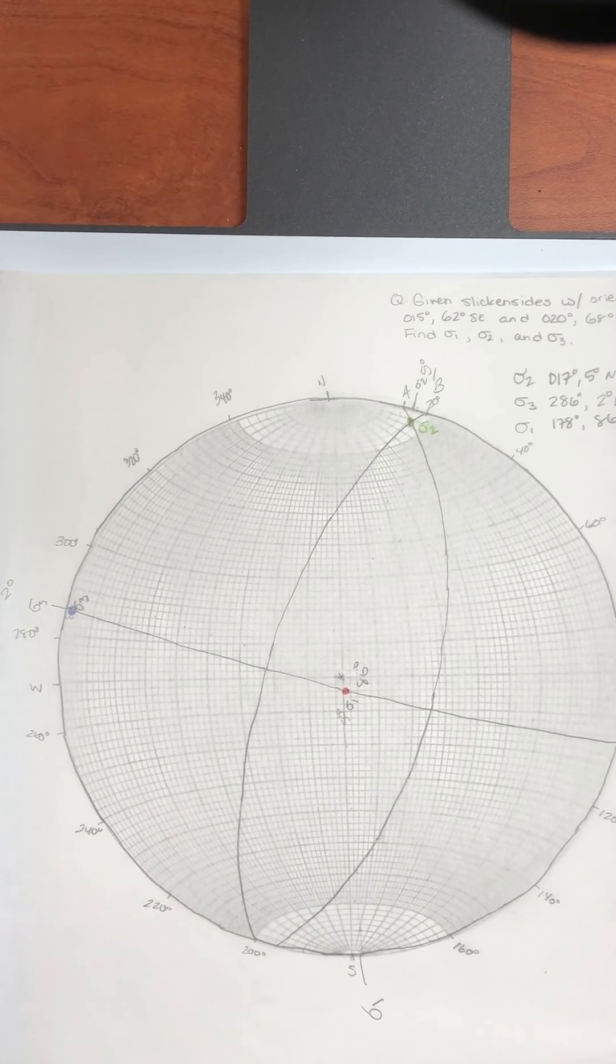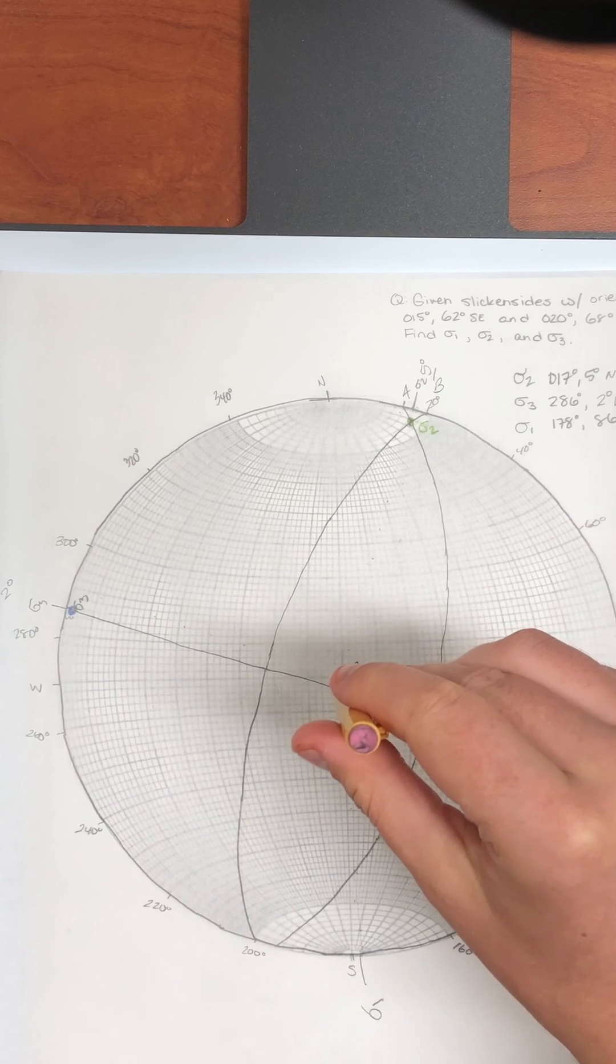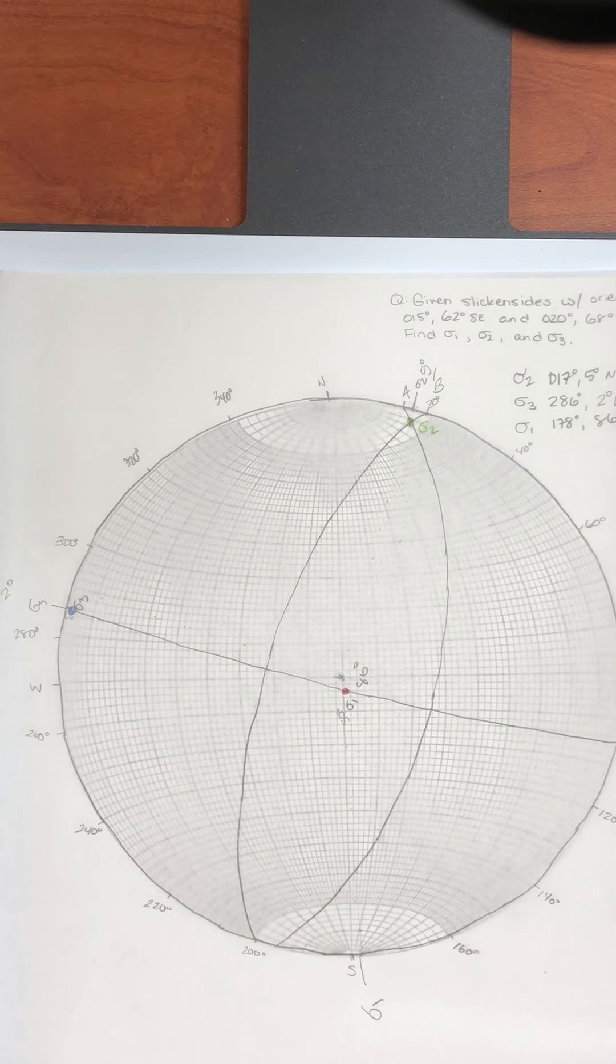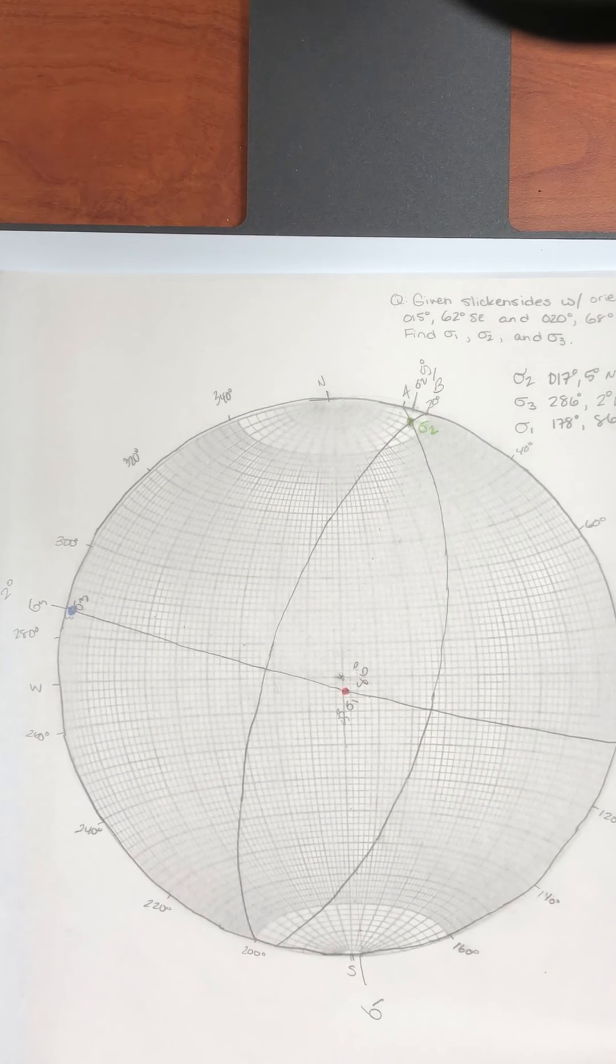Now, in a perfectly Andersonian system of faulting, and we're dealing with normal faults, sigma one would be perfectly vertical. So we would not be able to talk about a strike for that. But here, and in real life, it's not perfect. So you're going to have a little bit of a strike.